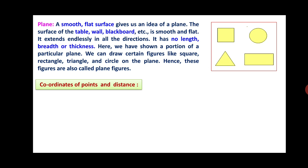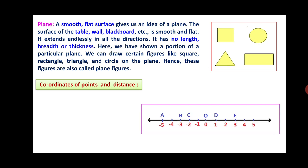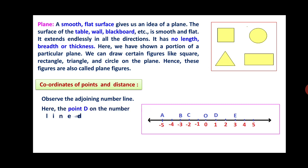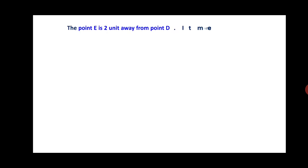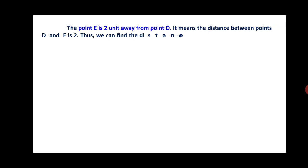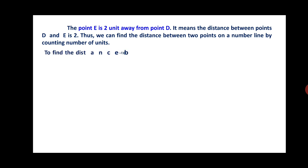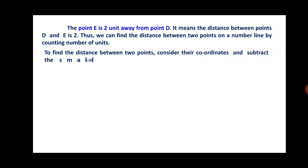Friends, now we will continue with coordinates of points and distance. Observe this figure. Here, you can see the point D on the number line denotes the number 1, so 1 is the coordinate of point D. The point B denotes the number minus 3 on the number line. The point E is 2 units away from point D, meaning the distance between point D and E is 2. Thus, we can find the distance between two points on a number line by counting the number of units. To find the distance between two points, consider their coordinates and subtract the smaller coordinate from the larger.